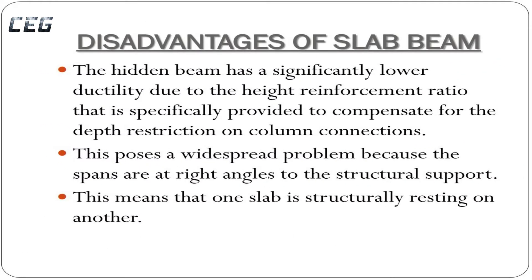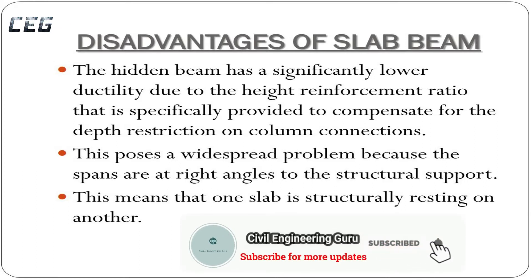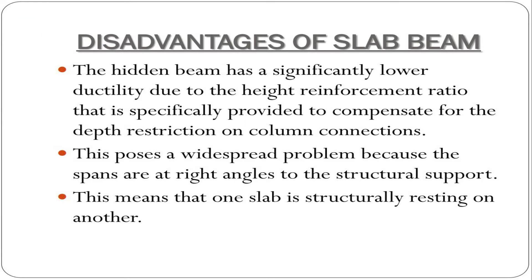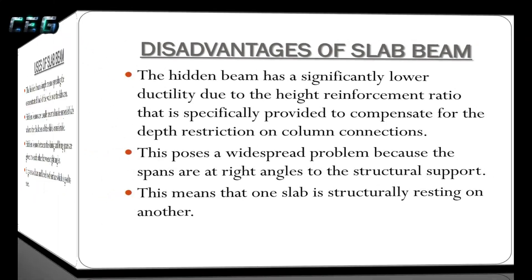Disadvantages of slab beam: The hidden beam has a significantly lower ductility due to the high reinforcement ratio that is specifically provided to compensate for the depth. There is a restriction on column connections, which poses a widespread problem because the spans are at right angles to the structural support. This means that one slab is structurally resting on another.